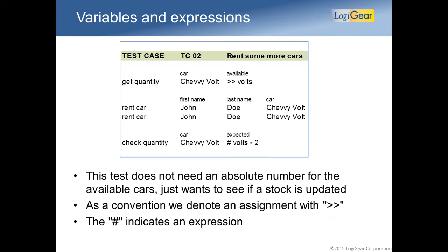Here are some refinements. I keep the quantity of Chevy Volts I have, store that in a variable named Volts, then I rent a car, then rent another car — and now I should have two fewer Volts left. Whenever you see a pound sign, that means it's a formula; in this case, the original amount minus two. Techniques like that make your test less dependent on preconditions — you don't have to know that number in advance.